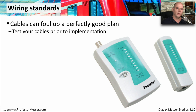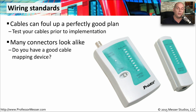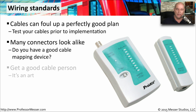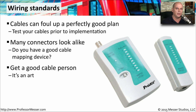Whenever you're installing fiber or copper cable into an environment, you want to be sure it's done exactly to specification. You don't want one end of the wire configured one way and the other end configured another. You want to test these wires prior to going into production. It's good to have a mapping device that's able to see exactly what the wiring is inside those cables. You might also consider getting a good cable person — someone accustomed to installing this physical plant — since your network relies on how well this physical installation is done. It's often a good thing to bring in an expert.